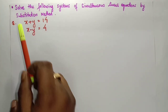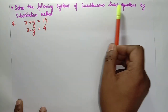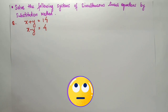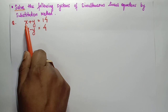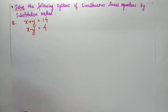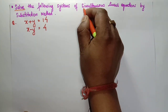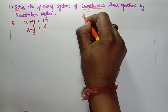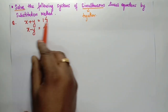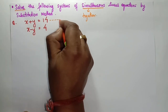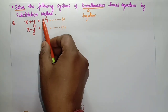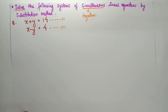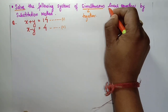Now let's start the sum. Solve the following system of simultaneous linear equations by substitution method. Solve means to find the value of the unknown variables — here x and y. Simultaneous means we take both equations together. We have equation one and equation two, and we'll solve them together.